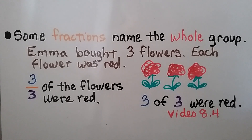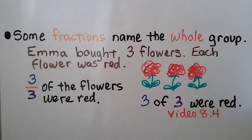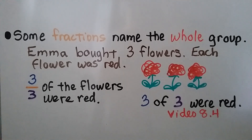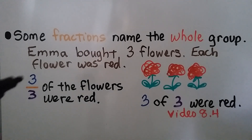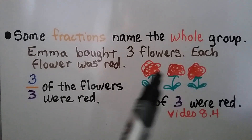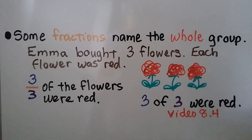Some fractions name the whole group. Emma bought three flowers and each flower was red. Three thirds of the flowers were red — three of three were red. That means all of them were red. When the numerator and the denominator are the same, that means we have one whole. So one whole group of flowers she bought were red.